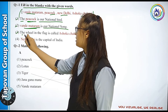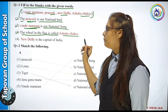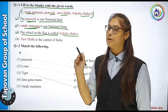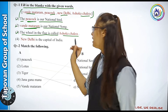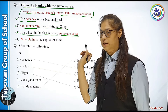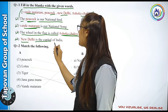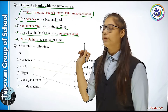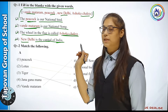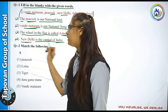Third: the wheel in the flag is called blank. The wheel in the flag — what do we call it? Ashoka Chakra. Fourth: blank is the capital of India. What is the capital of India? New Delhi.